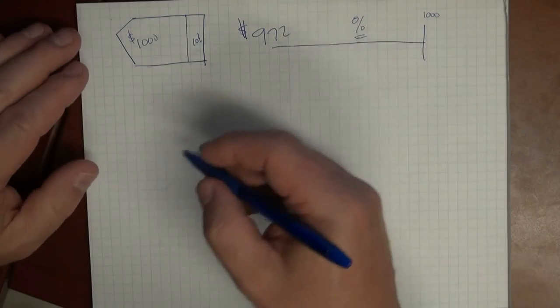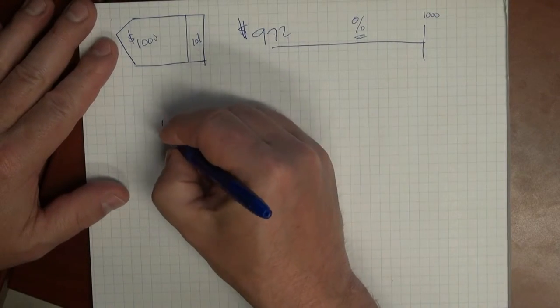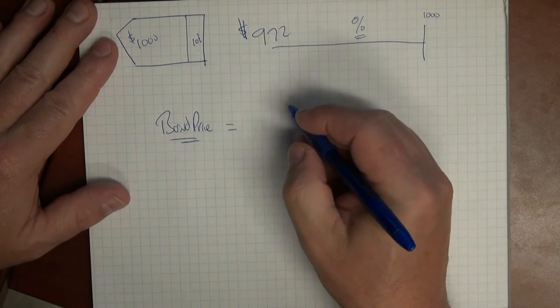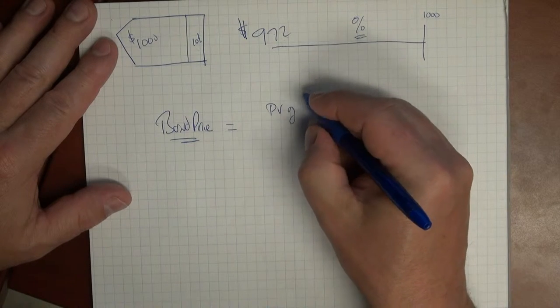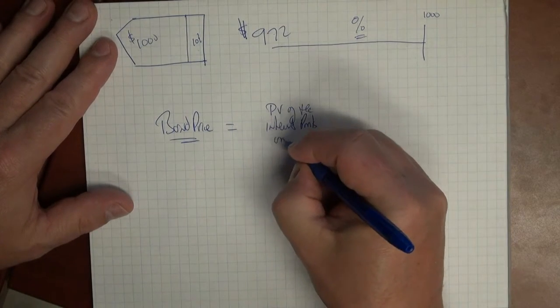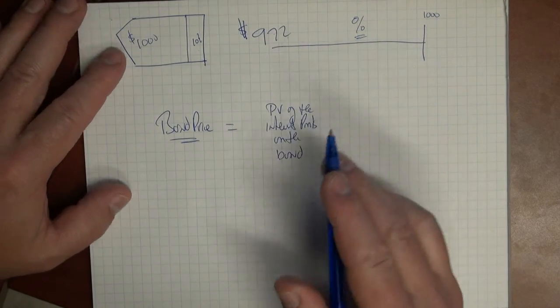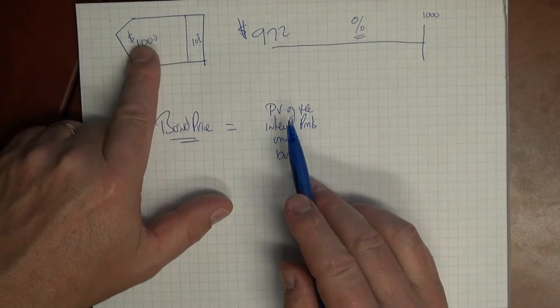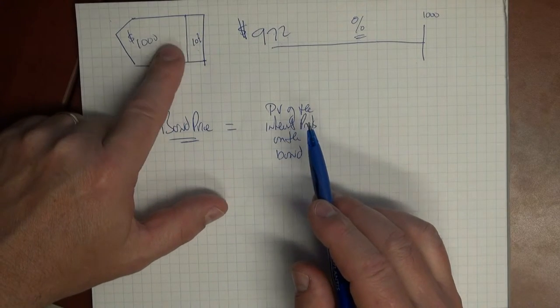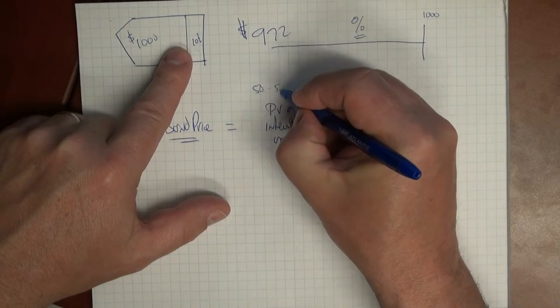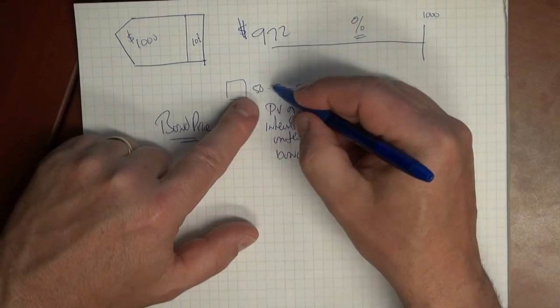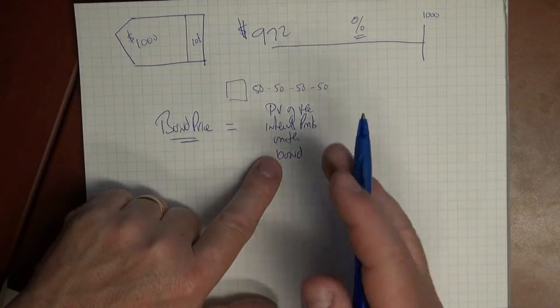Well, in order to calculate that, we know, for example, from our experience that the bond price is a function of the present value of the interest payments on the bond. So this particular bond here, for example, it pays $50 every half year. So it's a $50 and a $50 and a $50 and a $50. What we want to be able to do is bring that back to say, what is the present value of that stream of money? That's what we need to do in this part.